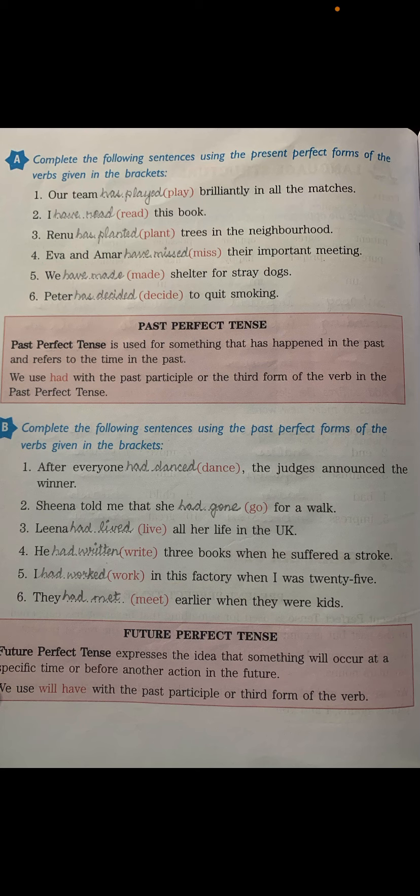Number two: 'Sheena told me that she had gone for a walk' — third form of 'go' is 'gone.' Number three: 'Leena had lived all her life in the UK.' Number four: 'He had written three books when he suffered a stroke' — third form of 'write' is 'written.' Number five: 'I had worked in this factory when I was twenty-five.' Number six: 'They had met earlier when they were kids' — third form of 'meet' is 'met.'